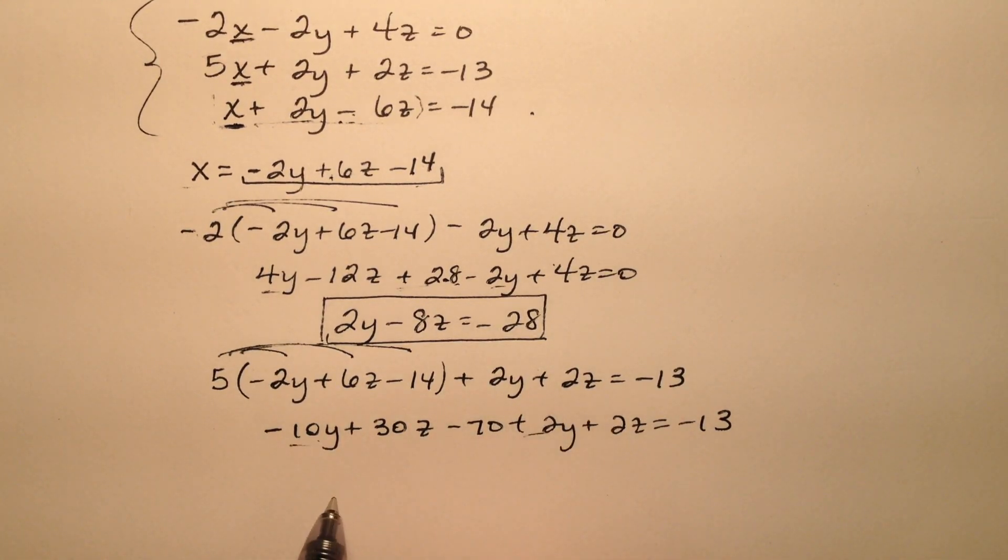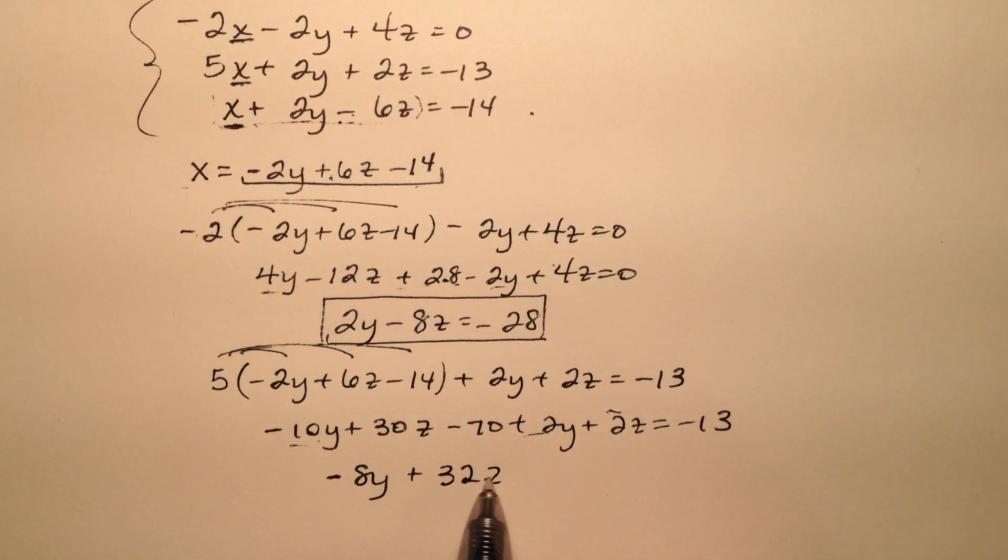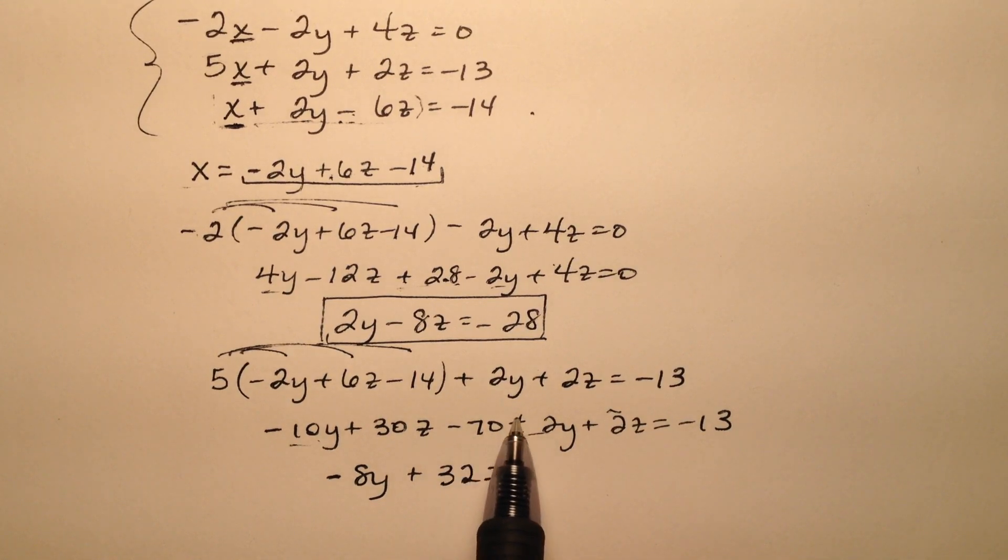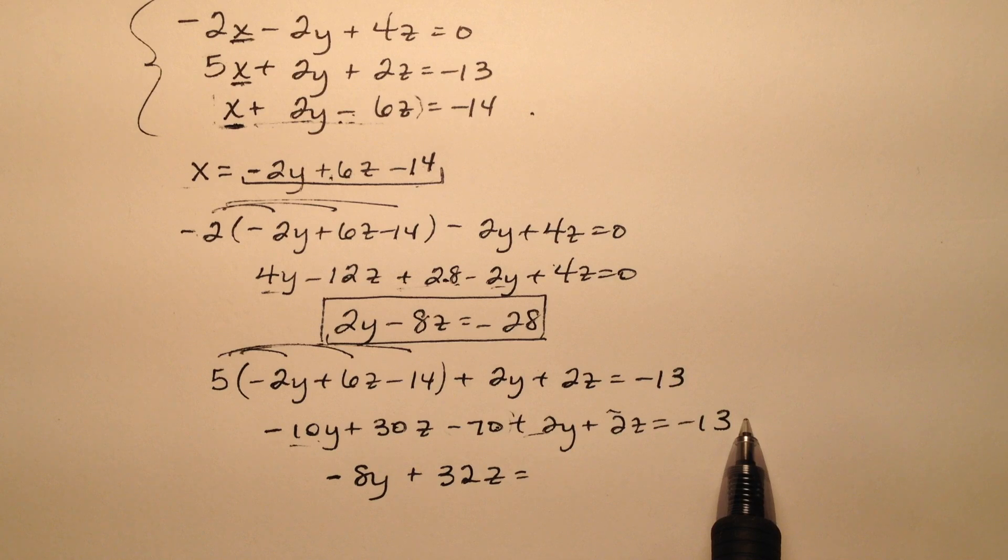So let's go ahead and combine like terms. I have a negative 8y and then a plus 32z, and that equals - I'm going to push this negative 70 from the left to the right, so I'm going to add 70, so I'm going to have 57.